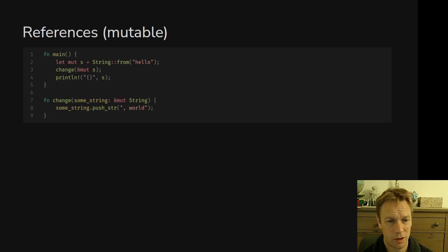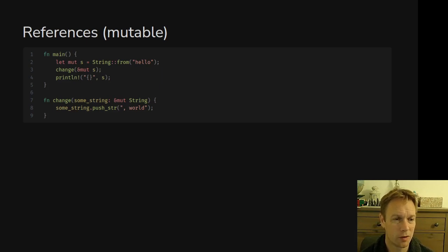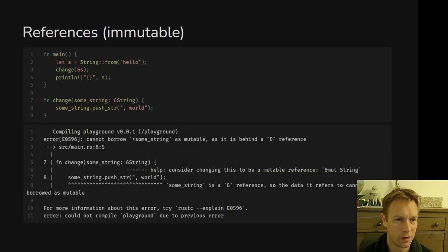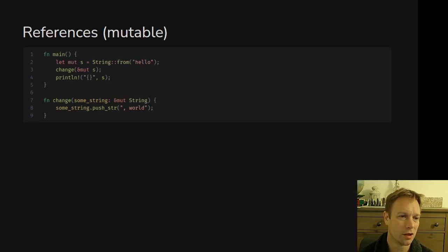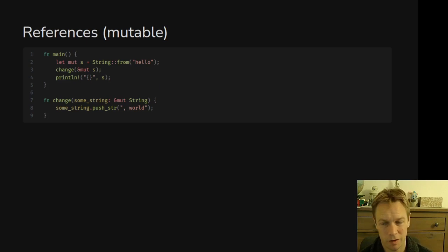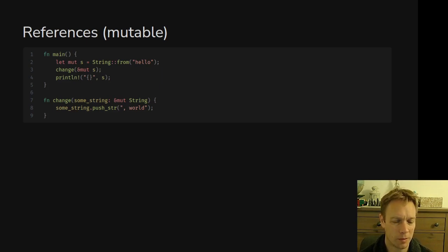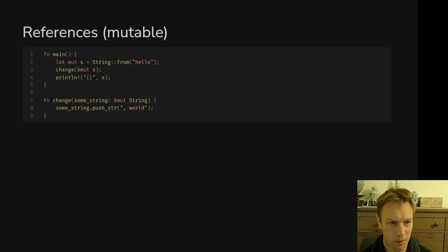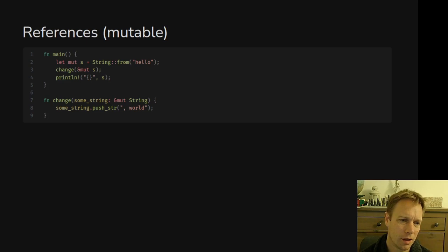So three places change between the old and new version. Line two: s needs to be declared mutable. Line three: we pass in ampersand mut s. Line seven: the parameter type becomes ampersand mut String. Notice that the ampersand and mut are separated by a space — it's slightly odd compared to just ampersand String all together, but there's no way around it syntactically. On line eight, we call the push_str method on this mutable reference to a string, as if it was just a string. In Rust, unlike C++, you don't need an arrow operator — if you've got a reference, you can just say dot push_str and it calls the method on the underlying string.